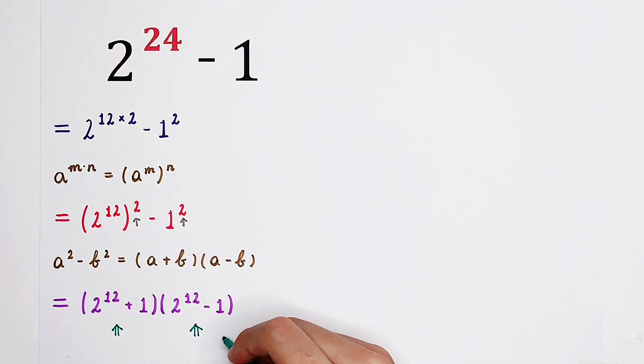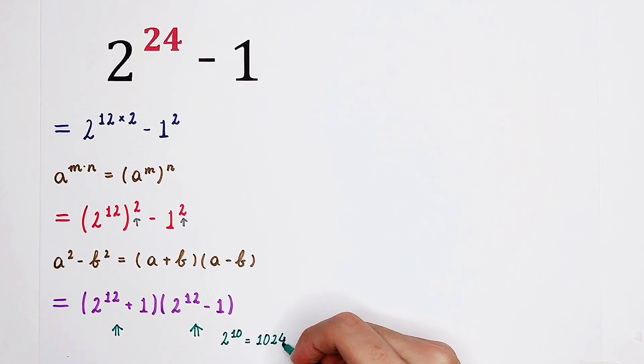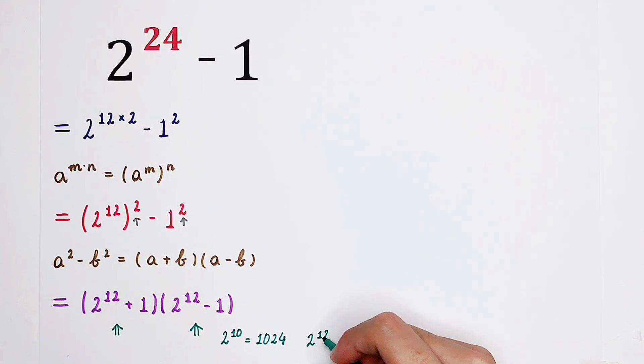We only have to evaluate 2 to the power of 12. I'm going to write here. 2 to the power of 10 is 1024. 2 to the power of 11 is 2048. 2 to the power of 12 is 2048 times 2. It is 4096.